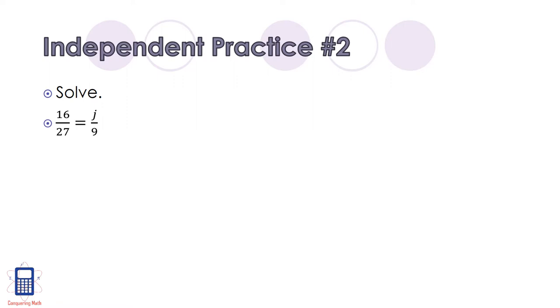For this problem, you'll need to solve for the missing value of j. 16 over 27 equals j over 9. Pause the video, give it a shot, and unpause the video when you're ready.